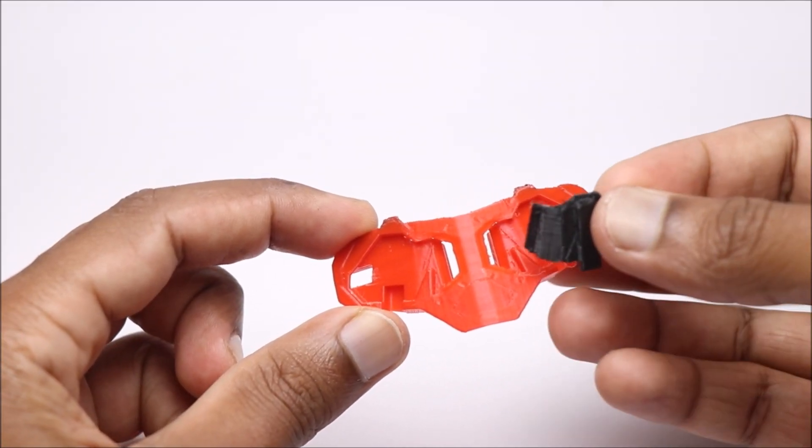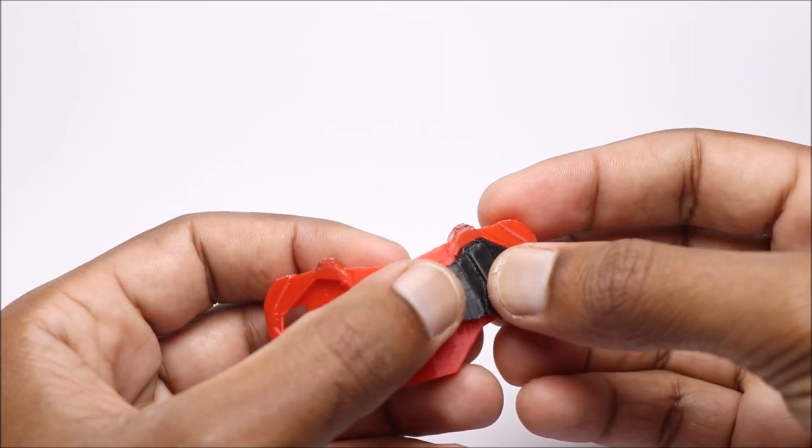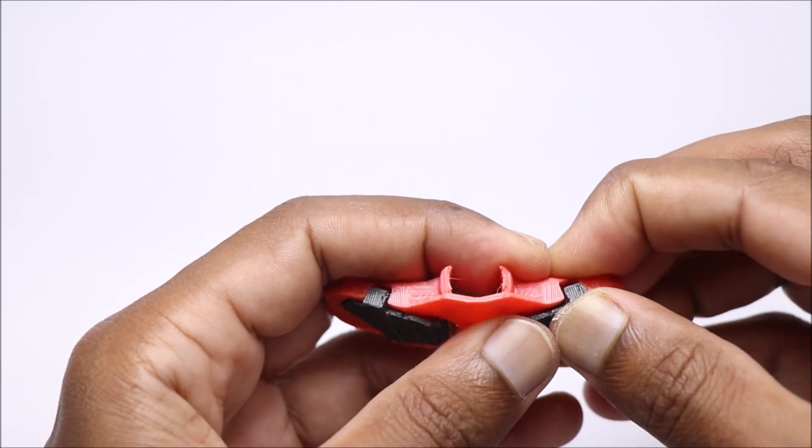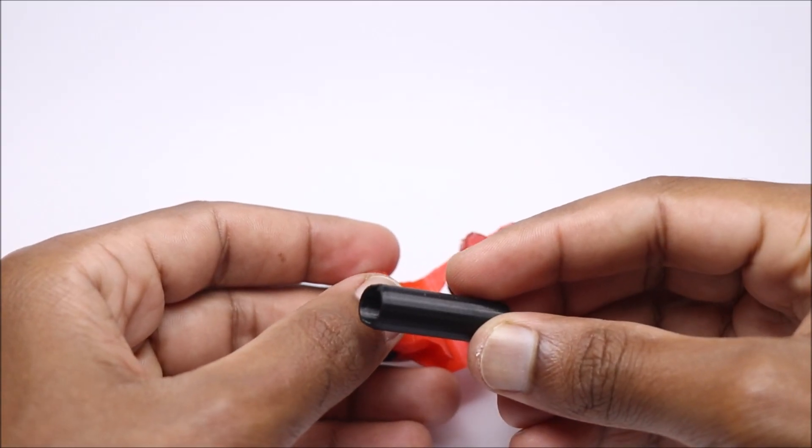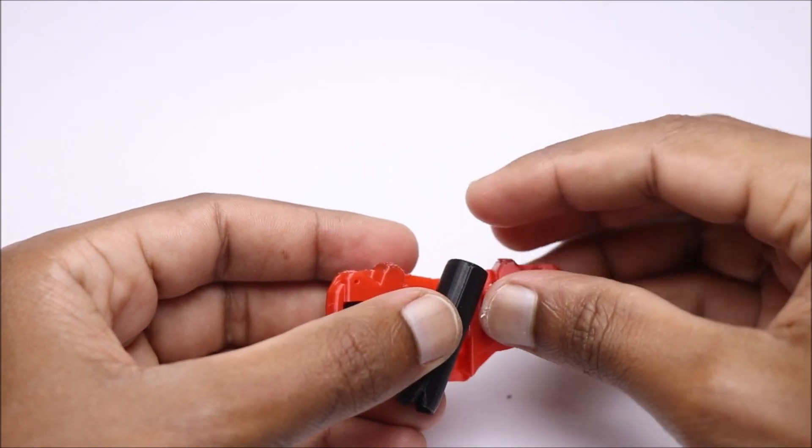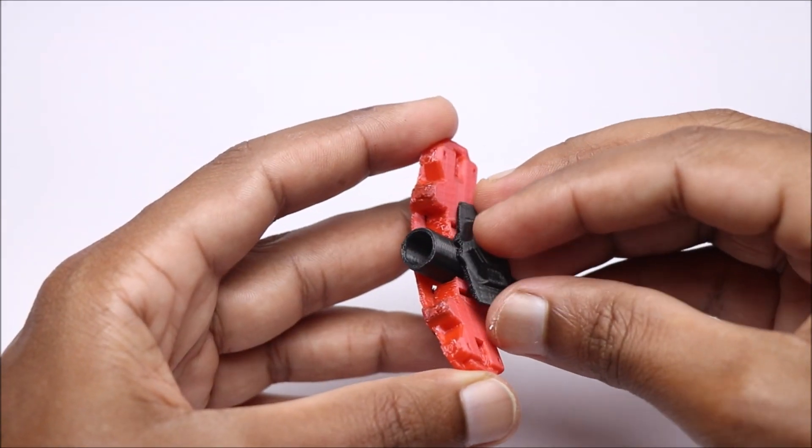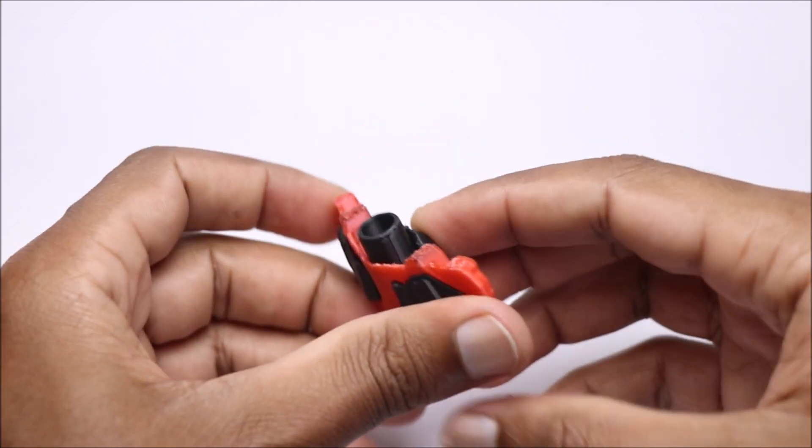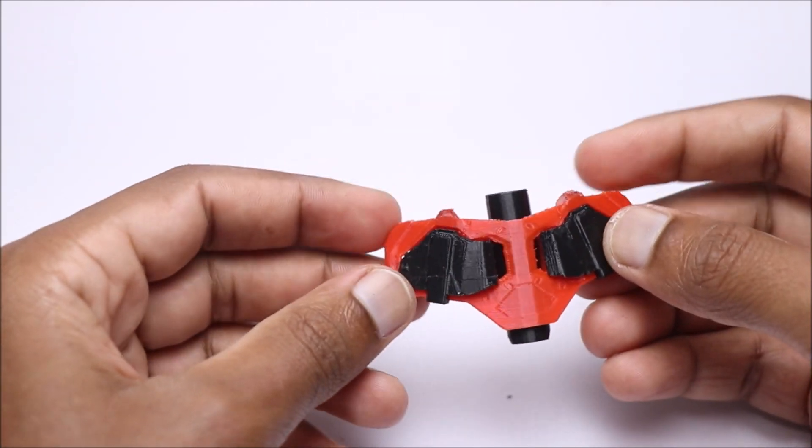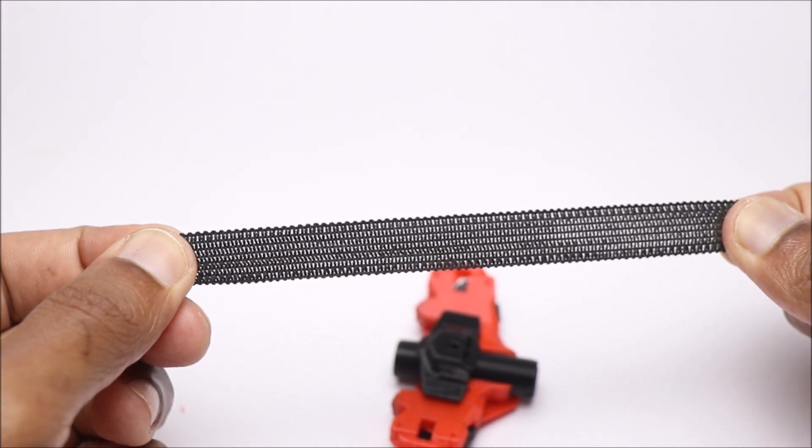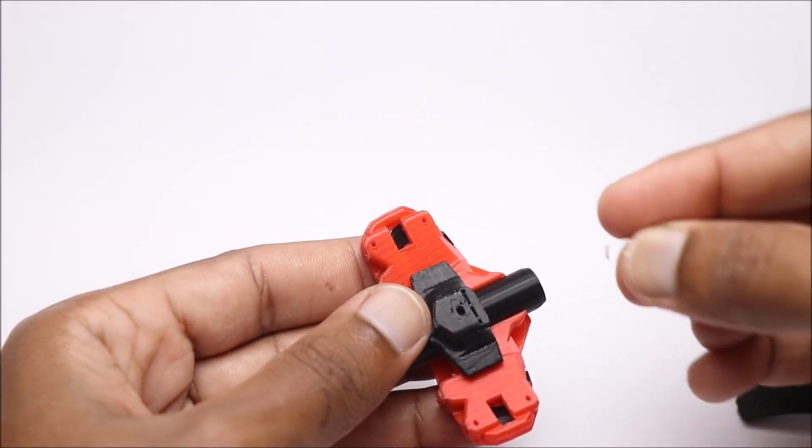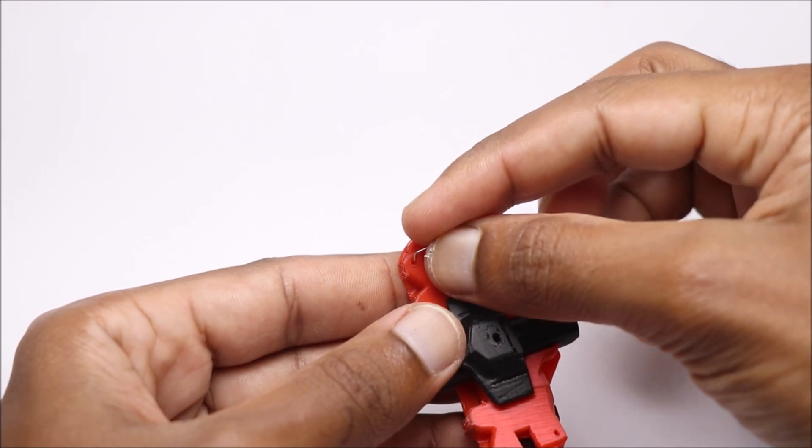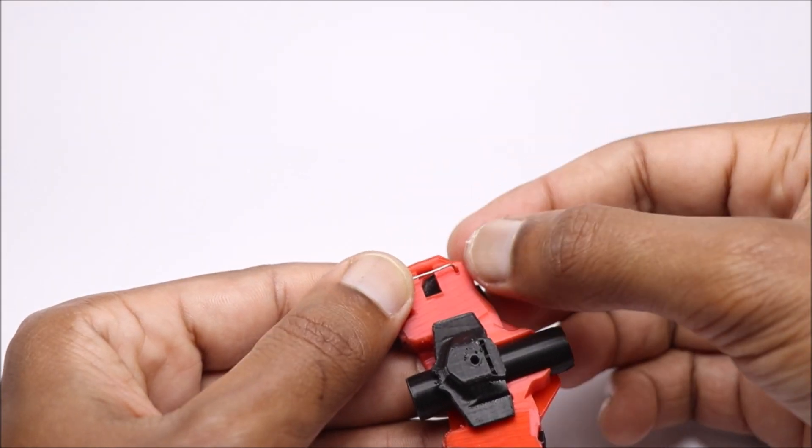Once we have all the finished parts, we can start to assemble them. To fit this on any hand, I used elastic bands and a 3D printed belt holder that fits pretty well to the web shooter.